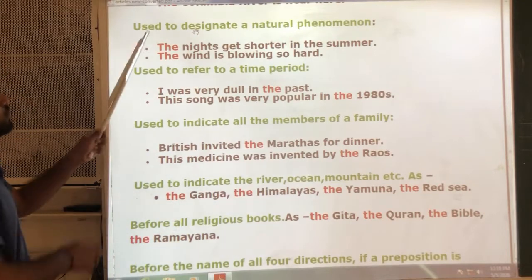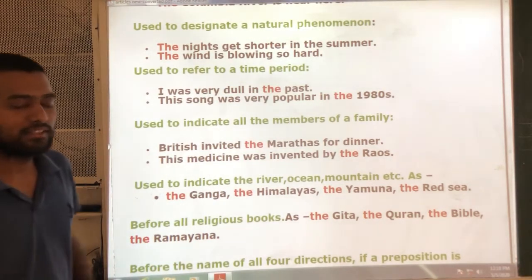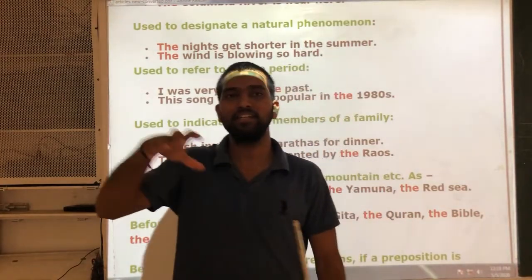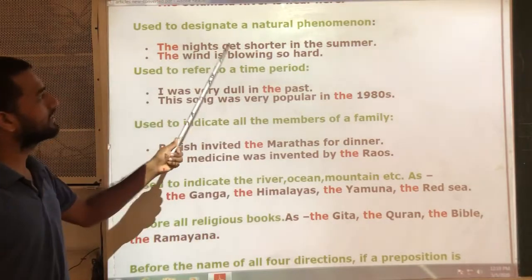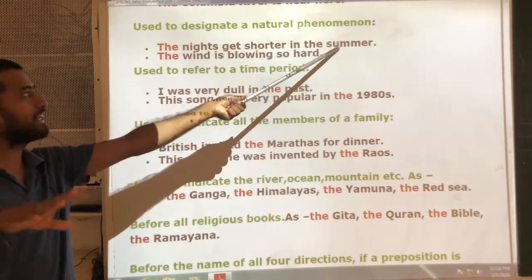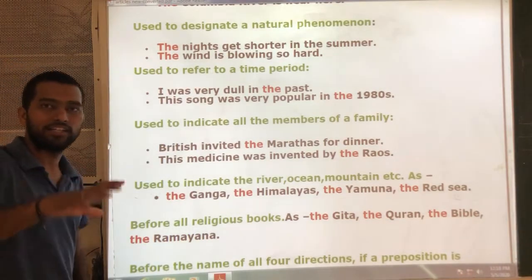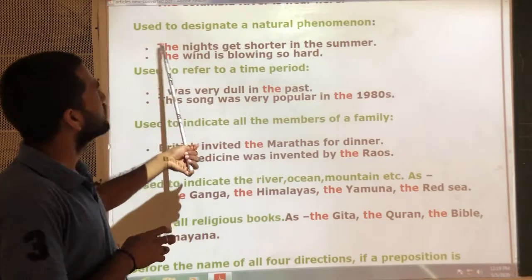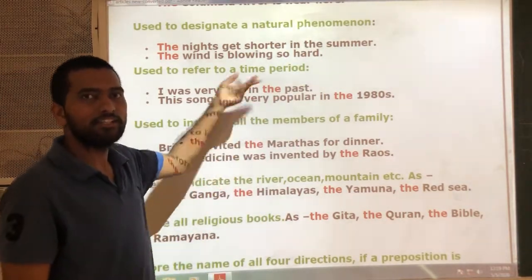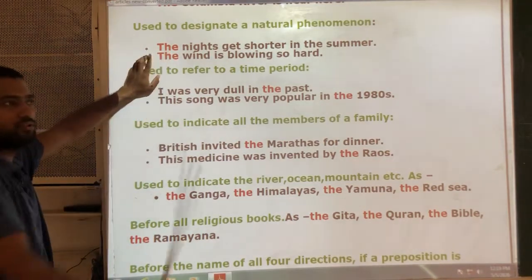Third rule: use 'the' to designate a natural phenomenon — an action that happens naturally, without human involvement. For example, 'The nights get shorter in the summer' — this happens naturally, no human being causes this action. Another example: 'The wind is blowing so hard' — this is also done naturally. When these types of natural actions are referred to, we use the article 'the'.